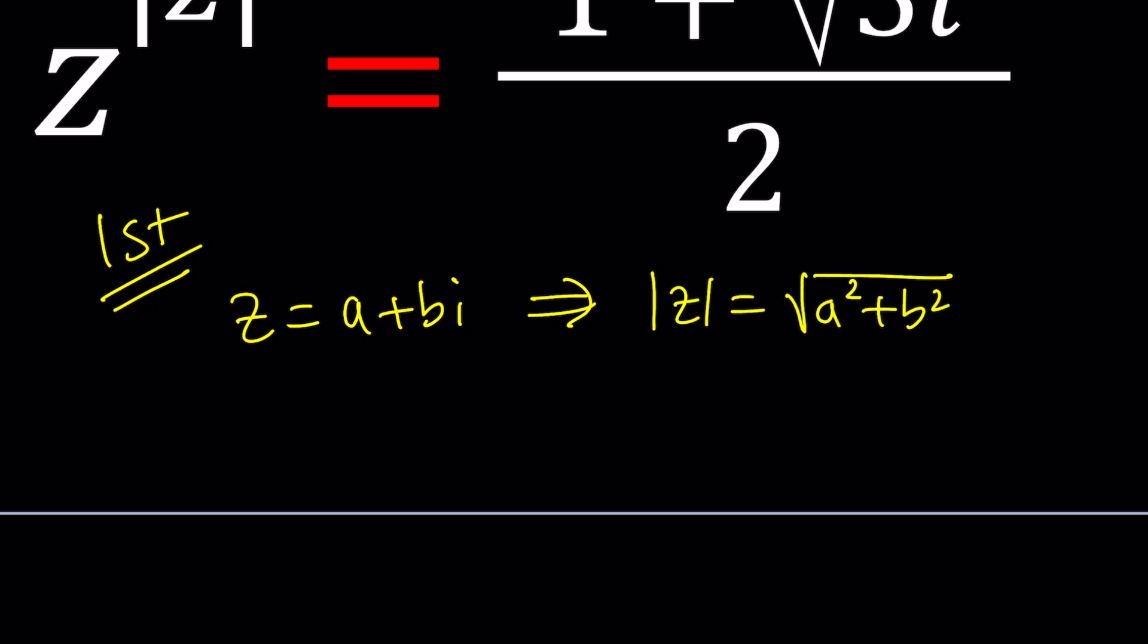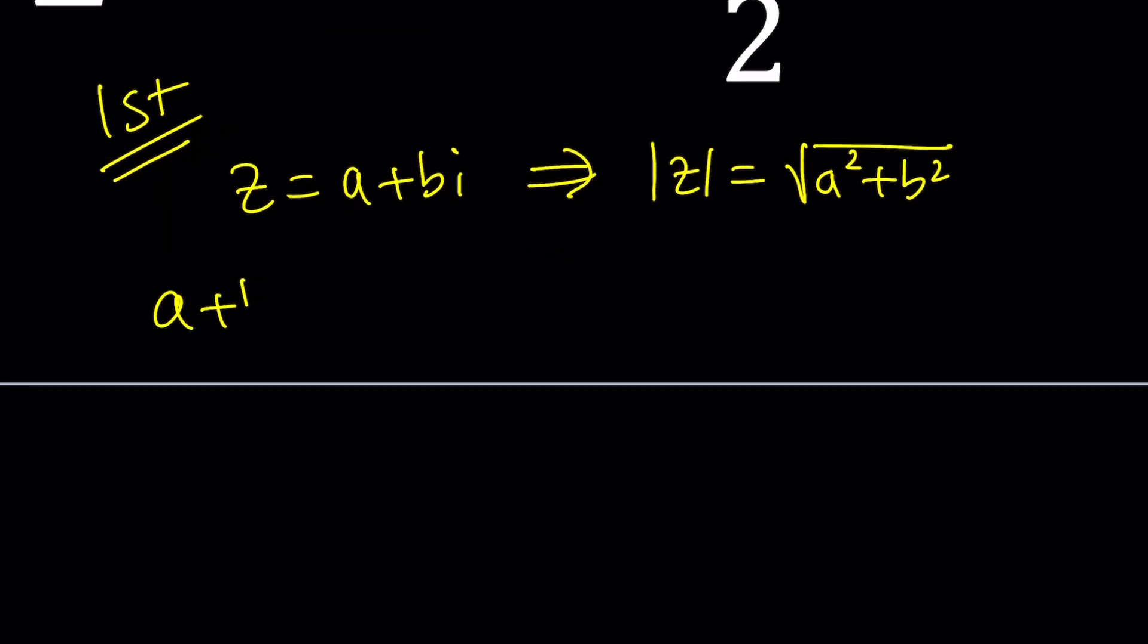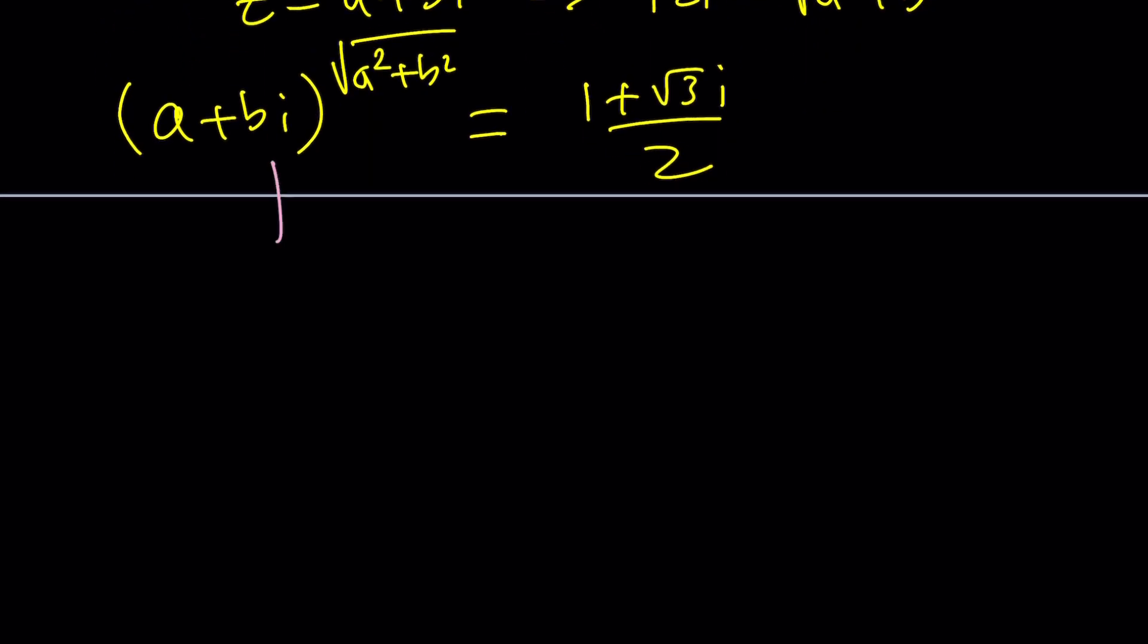Suppose z equals a plus bi and we get the following. Now let's substitute. We can go ahead and solve this by using complex exponentiation, write this as e to the power...